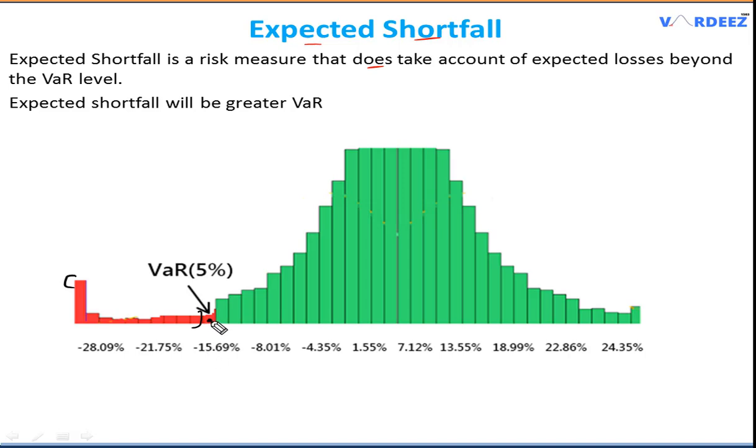We do not include the VAR itself. We just take the average of all losses above or beyond the VAR level. Hopefully you're now clear with the concept of expected shortfall - it's just the average of all losses beyond the VAR level. That's the meaning of expected shortfall.